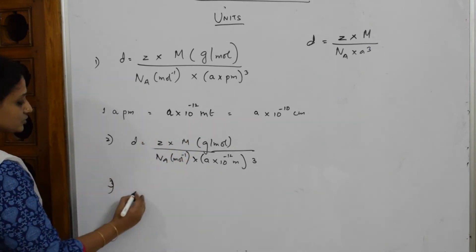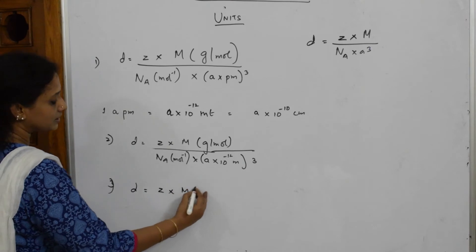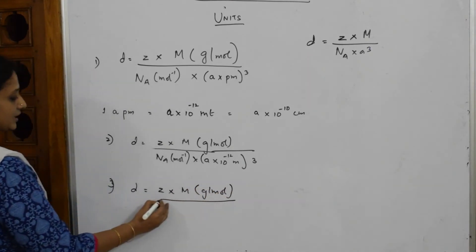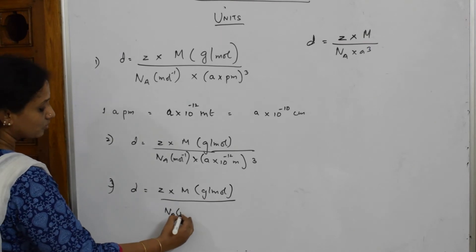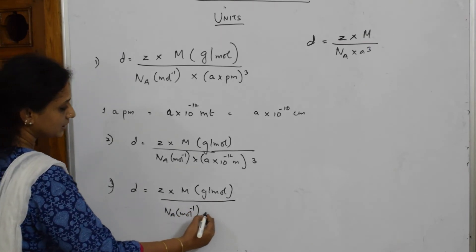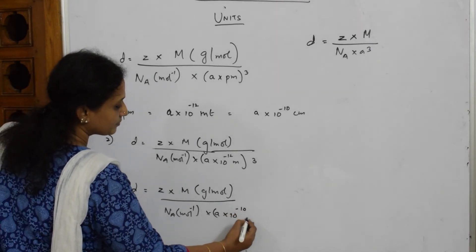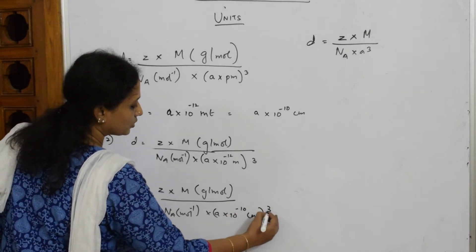If I write in terms of centimeter, it comes to D is equal to Z into molecular weight per mole, divided by NA mole inverse into A into 10 raised to minus 10 centimeter whole cube.